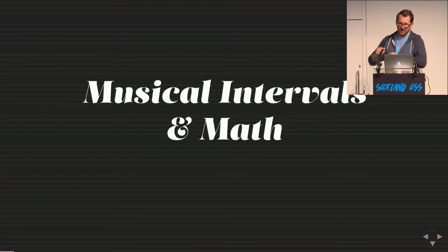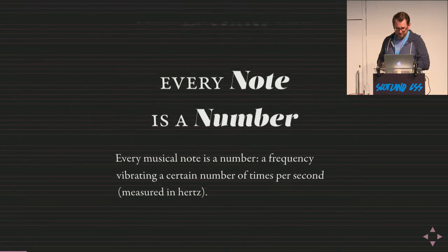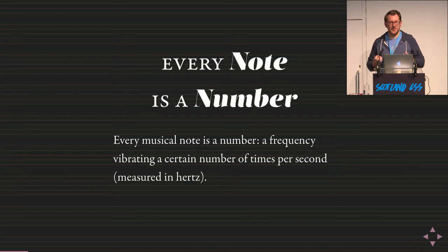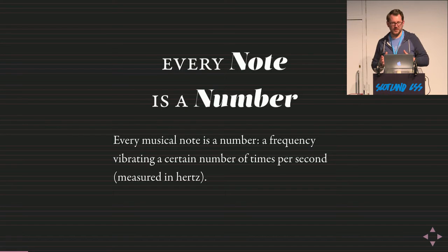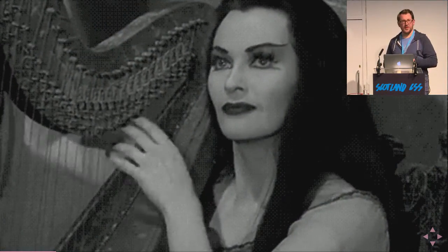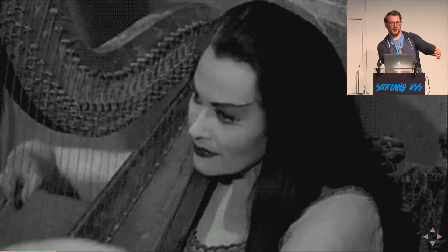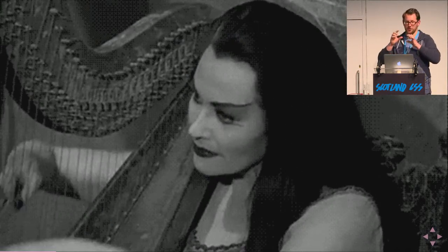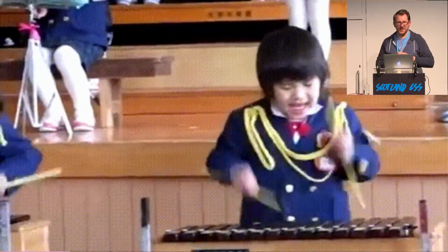First, let's talk about musical intervals and math. Every musical note has a specific frequency — vibrations per second, measured in hertz. You can see this in instruments: with a trombone, the longer the slide, the lower the note. Music corresponds to length, to a dimension, to a measurement. The same is true for the harp — the longer strings produce lower pitches, and the shorter strings at the top produce higher ones.